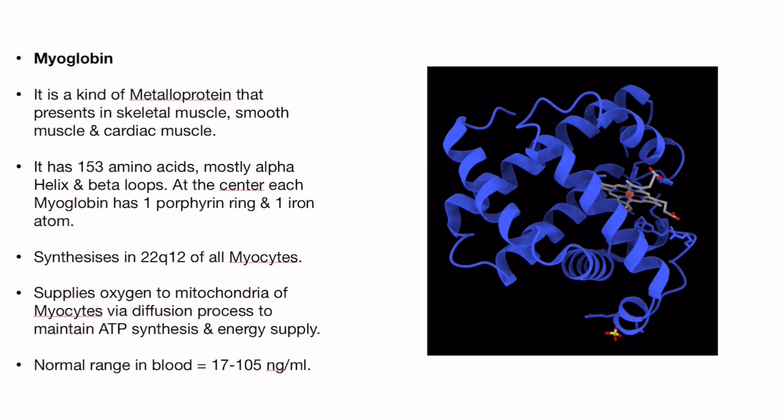The normal range of myoglobin in blood is 17 to 205 nanograms per mL. See you in the next video — bye!